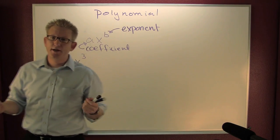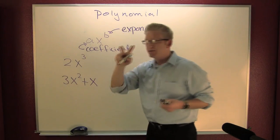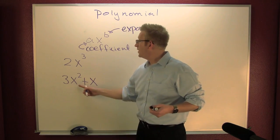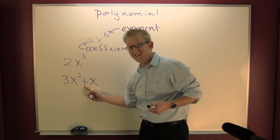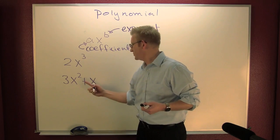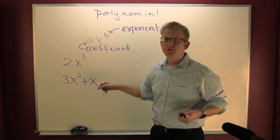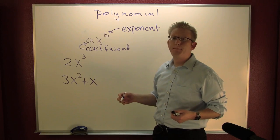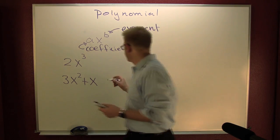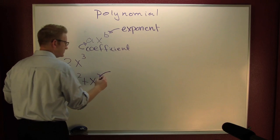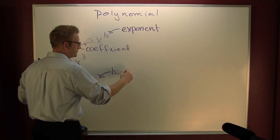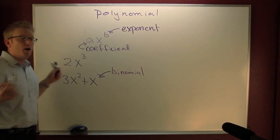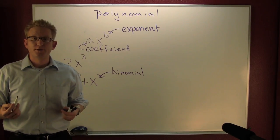How many terms do you see there? I see two terms. Two terms. Terms are separated by the operation — addition or subtraction. This has two terms. This is called a binomial.